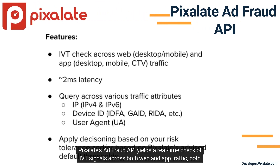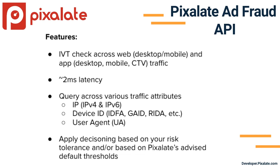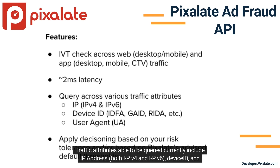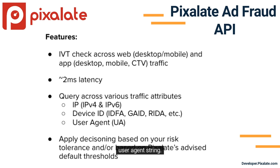Pixelate's AdFraud API yields a real-time check of IVT signals across both web and app traffic, both mobile and CTV. An average latency of 2 milliseconds or less allows for integration across just about any use case scenario. Traffic attributes able to be queried currently include IP address — both IPv4 and IPv6 — device ID, and user agent string.